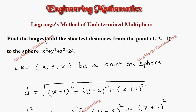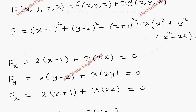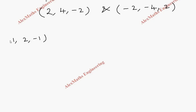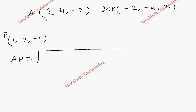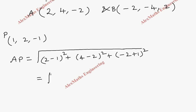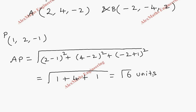The given point P is (1, 2, −1). The distance from stationary point A = (2, 4, −2) to P is: √[(2−1)² + (4−2)² + (−2−(−1))²] = √[1 + 4 + 1] = √6 units.